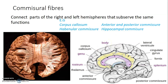Commissural fibers connect parts of the right and left hemispheres that subserve the same function — for example, primary motor cortex on the right to primary motor cortex on the left. The main example is the corpus callosum, connecting two functional areas that subserve the same function on different hemispheres.